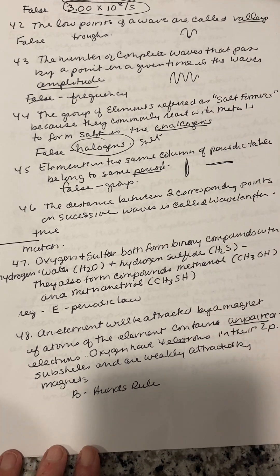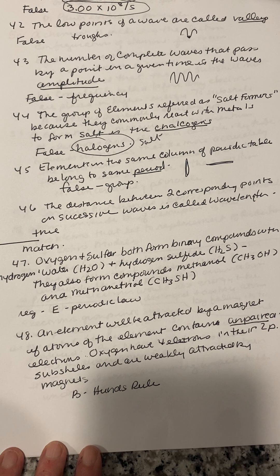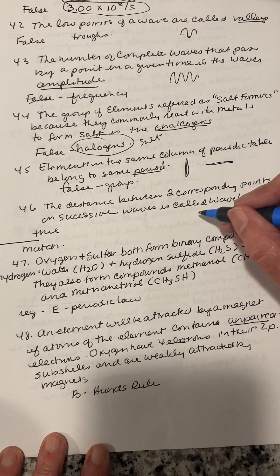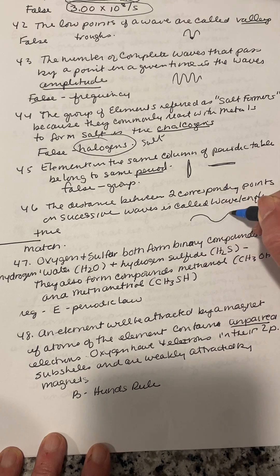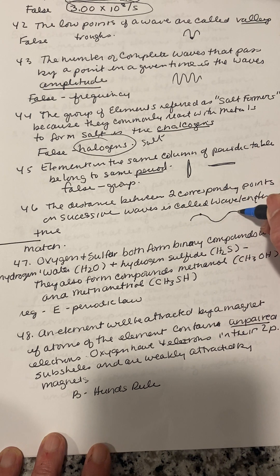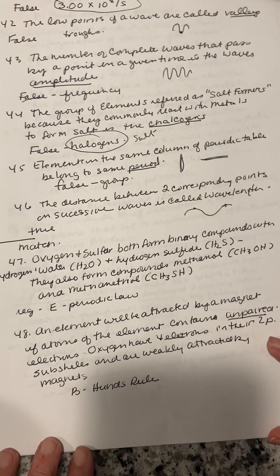Number forty-six: the distance between two corresponding points on successive waves is called the wavelength — true. You have a wave, and between one crest and the next crest is your wavelength.